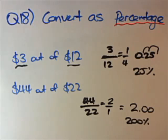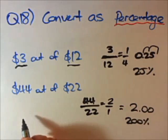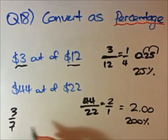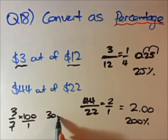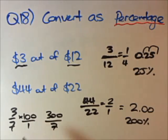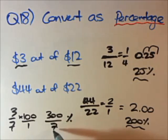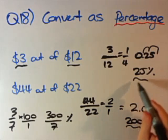A golden rule for harder questions: if you have something like 3 out of 7, another method that works every time is to multiply the fraction by 100. That's the same as multiplying by 100 over 1, giving 300 over 7. When you multiply by 100 you convert it into a percentage. The final step is to simplify this fraction — whatever neat number you get will be your percentage answer.